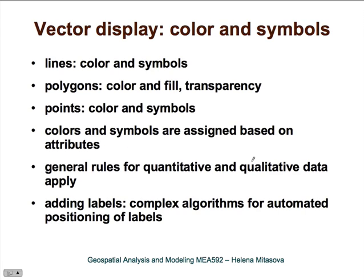With vector display, we can use extensively not only color but also a rich set of symbols — both for lines, points, and for polygons where we can use different types of fill. Colors and symbols for vector data are assigned based on attributes. The general rules for quantitative and qualitative data apply: with quantitative data we try to use the same hue and change intensity; for qualitative data we keep the intensity the same and change the hue depending on the attribute.